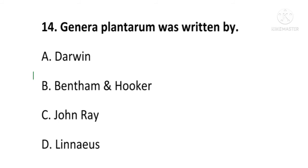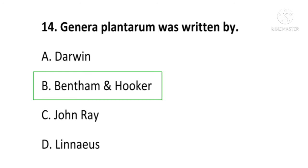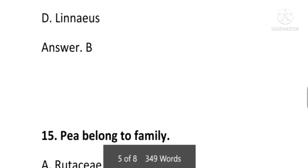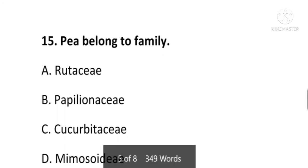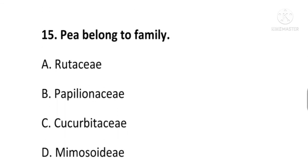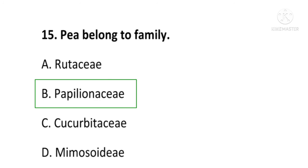Next question: Genera Plantarum was written by — Darwin, Bentham and Hooker, Engler, or Linnaeus? The answer is B, Bentham and Hooker. The book Genera Plantarum was written by Bentham and Hooker. B is the correct option.